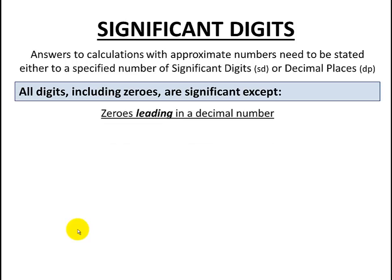The zeros leading in a decimal number. So here's an example. We have a value 0.0058 tons. That has two significant digits. Why is it only two? Well, you can see here that the leading zeros are not significant. So we don't count them. We just count the values that we can read, the 5 and the 8.